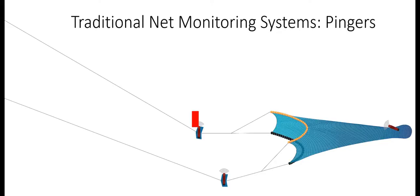First, we look at traditional net monitoring systems. These are known as pinger-based systems, where signals go from the sensors direct to the ship. So there is only one-way communication between the sensor and the ship. This has some limitations.